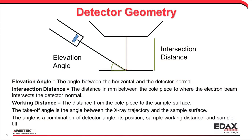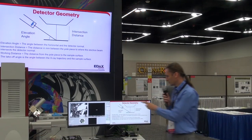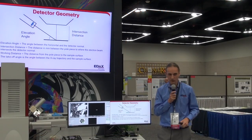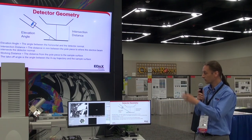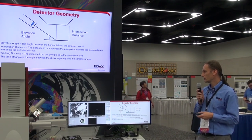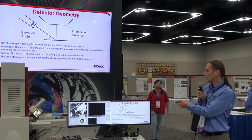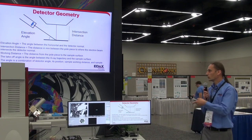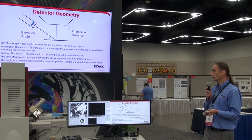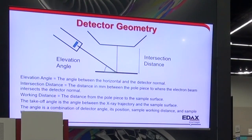The working distance doesn't have to match exactly, which we'll show in a moment. The intersection distance and elevation angles are fixed parameters once the detector is bolted onto the microscope. The working distance is the knob you can change freely to focus at different depths. The takeoff angle is the angle between x-ray trajectory and sample surface, and it depends on the detector elevation angle, where it's positioned, working distance, and the tilt.